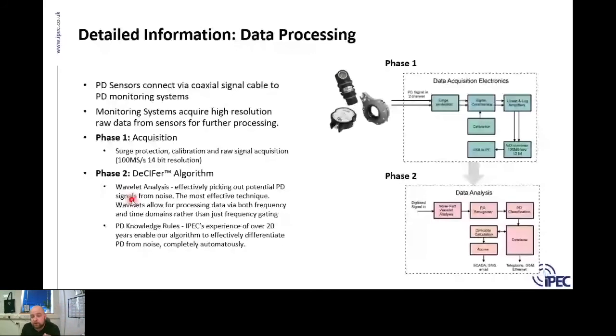The next stage is the knowledge rules. So built into our system is this experience of 22 years of PD monitoring of cables that we've done, and then we can apply those PD knowledge rules and decide if something - the system can then decide if something is in fact cable PD, is it local PD, is it switchgear PD, and classifies it appropriately.